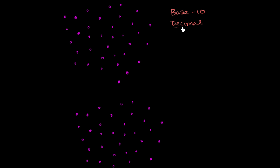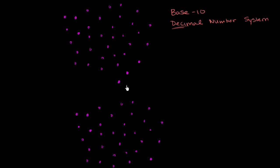Decimal — you know the prefix 'deci', it refers to 10 — decimal number system. When people talk about a decimal number system, they're not just talking about what we traditionally associate with decimal numbers to the right of the decimal point. They're talking about base 10. One way to think about it is how you would think about money. If you have a bunch of money, or you're trying to represent a bunch of money with the smallest possible bills, you'll try to figure out the biggest bill that is smaller than that amount of money.